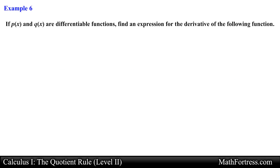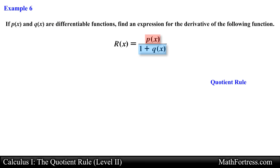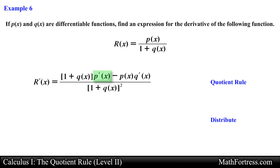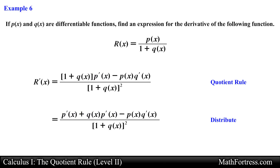Let's try another example: r equals p over the quantity 1 plus q. Similar to the last example, let's apply the quotient rule. The high function is p and the low function is the quantity 1 plus q. Applying the quotient rule we obtain the quantity 1 plus q times p prime minus p times q prime, over the quantity 1 plus q squared. We can also distribute p prime in the numerator. Either expression is an acceptable answer for the derivative.